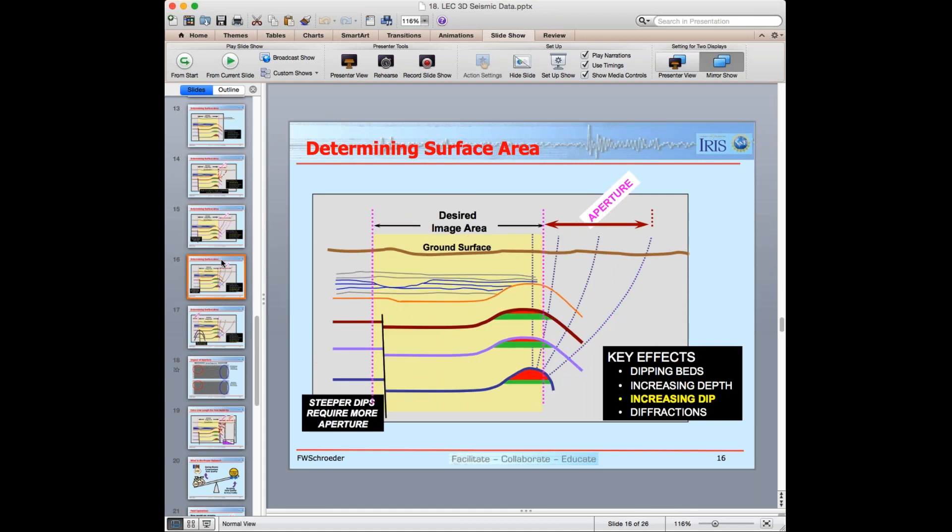Increasing dip. Now I'm showing the deepest layer, and I have a couple of zero offset ray paths. And as the dip is going from shallow near the crest of the anticline to steep on the flank of the anticline, I need more and more aperture as that dip increases. And that's why one of the things the interpreter has to tell the acquisition folks, what sort of structural dips are you anticipating?